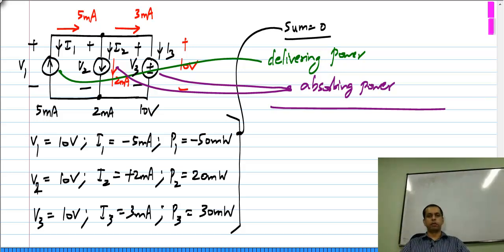Just like a voltage source, a current source can absorb or deliver power. In this example with 3 independent sources, one happens to be delivering power and the other two happen to be absorbing power.